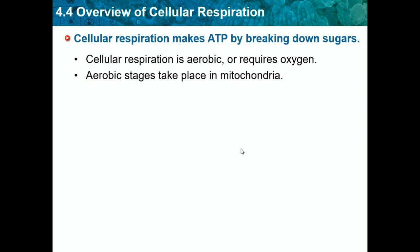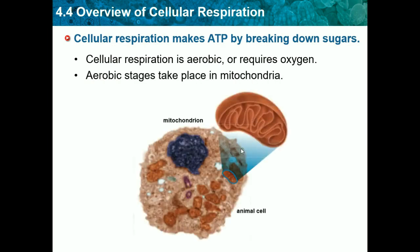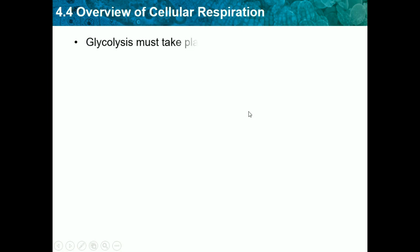The aerobic stages take place in the mitochondria. This is our animal cell and this is our mitochondria. Glycolysis must take place first.